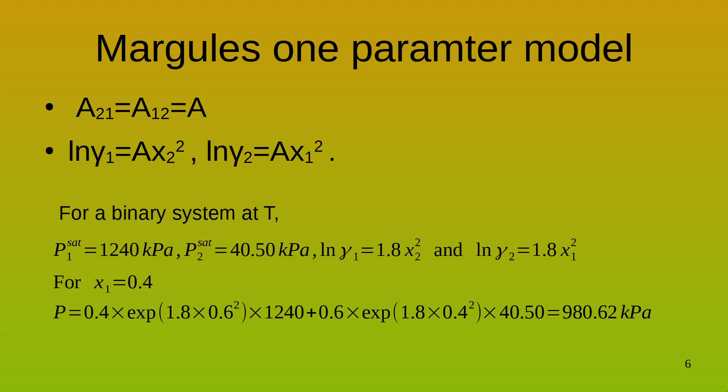Now, what is a Margules 1 parameter model? Well, if you take A21 is equal to A12 is equal to A, we get the following equation. Ln gamma 1 is equal to A x2 squared and ln gamma 2 is equal to A x1 squared. This is a Margules 1 parameter model. Now, let us take a simple example and see how this Margules 2 parameter model or the Margules 1 parameter model allows us to do some calculations.